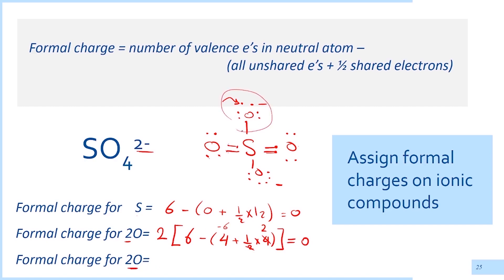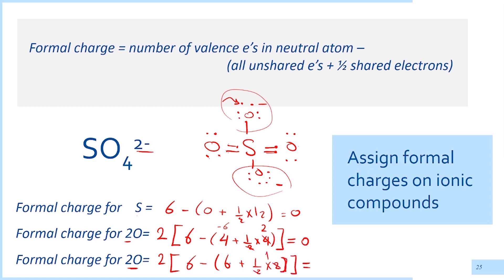For the two singly bonded oxygen atoms, we multiply by two: six valence electrons minus six unshared electrons, and half of the two shared electrons — one, two — equals negative one each. This gives a total of negative two, which is the negative two charge we usually write on top of the sulfate ion, SO4²⁻.